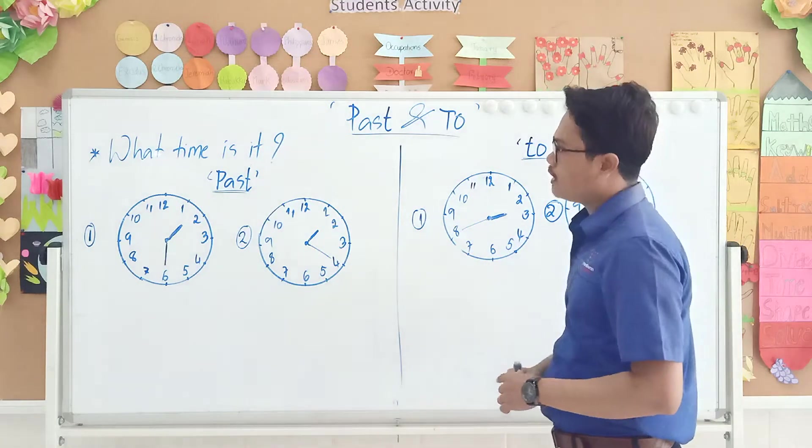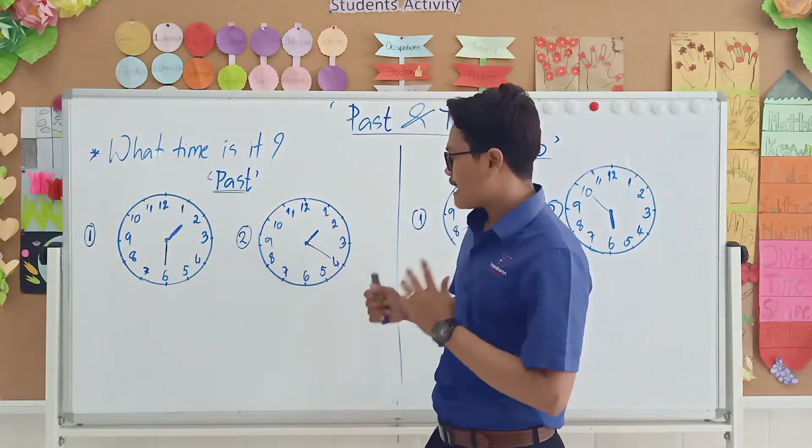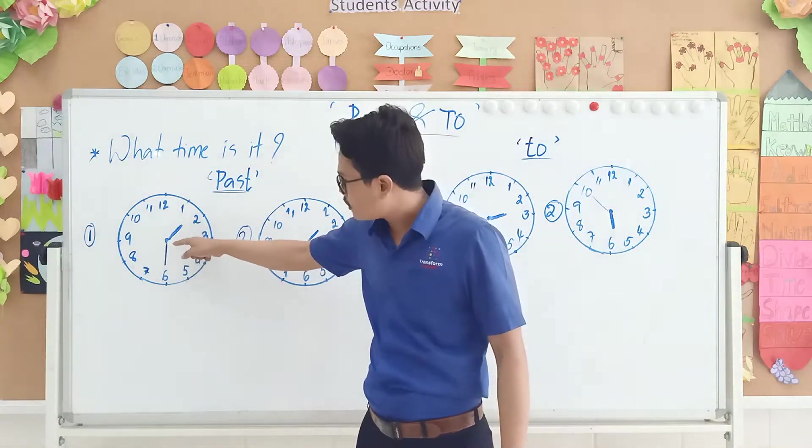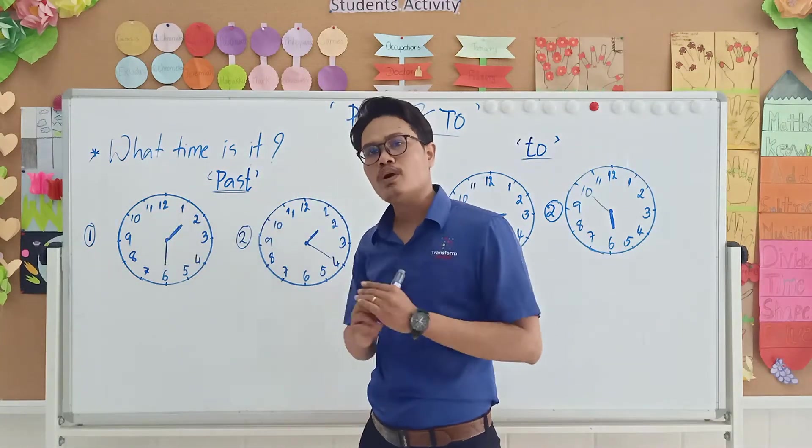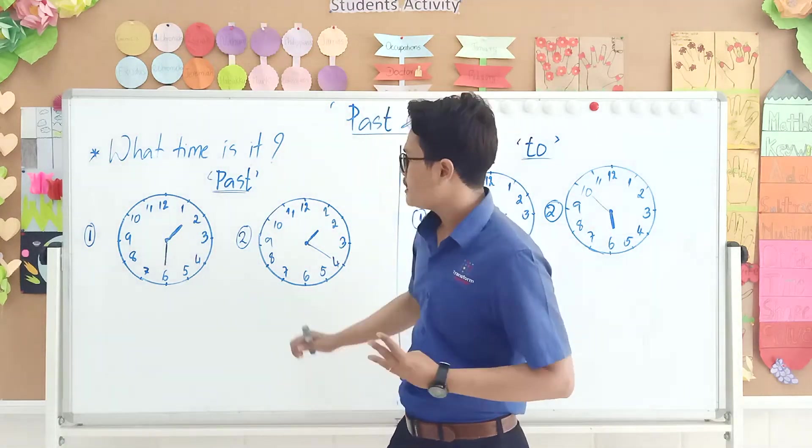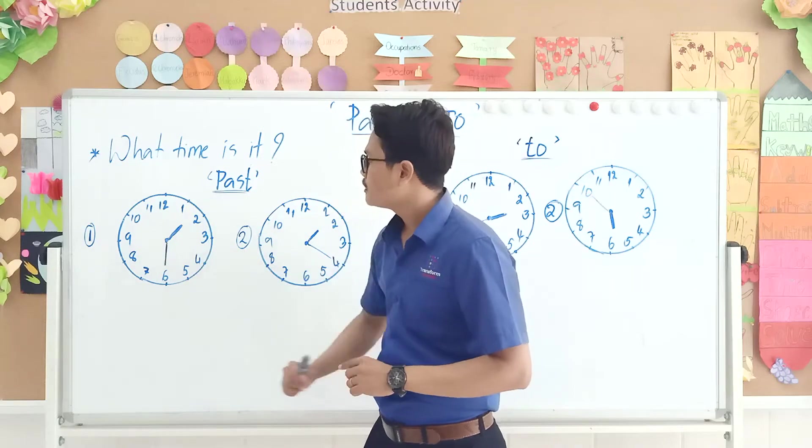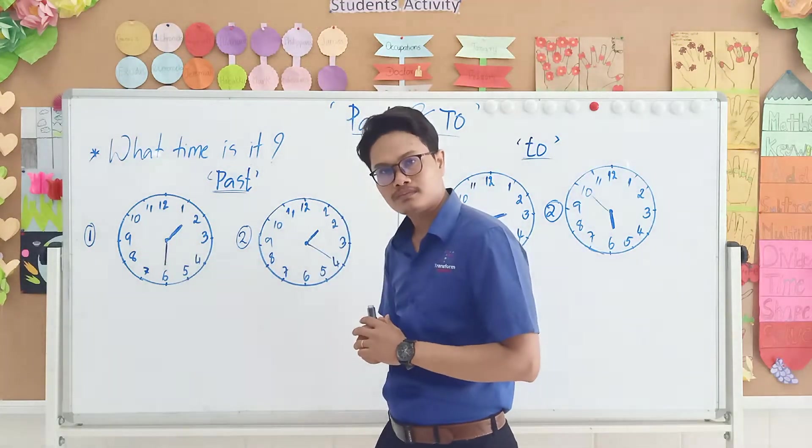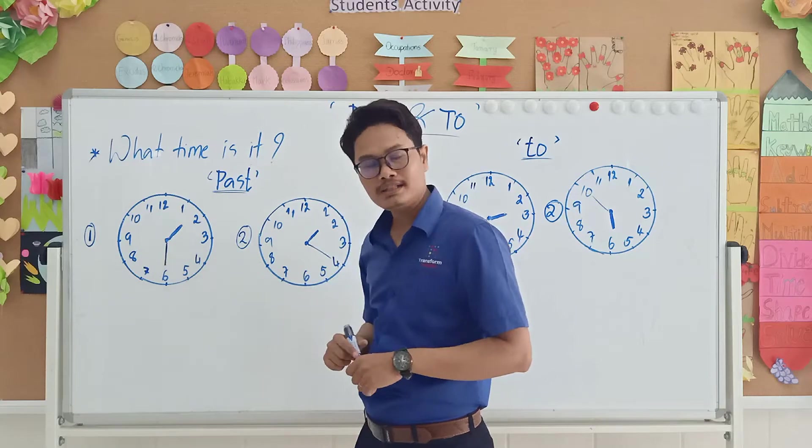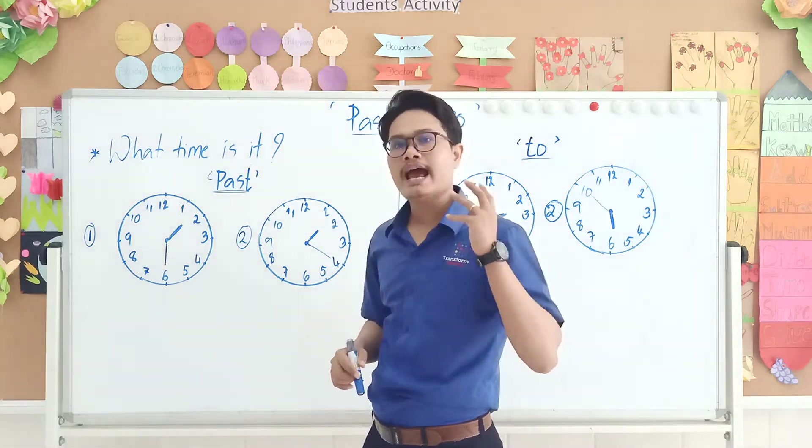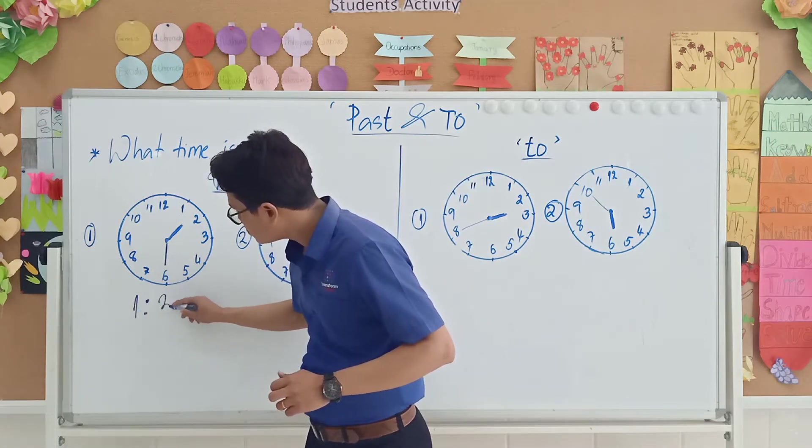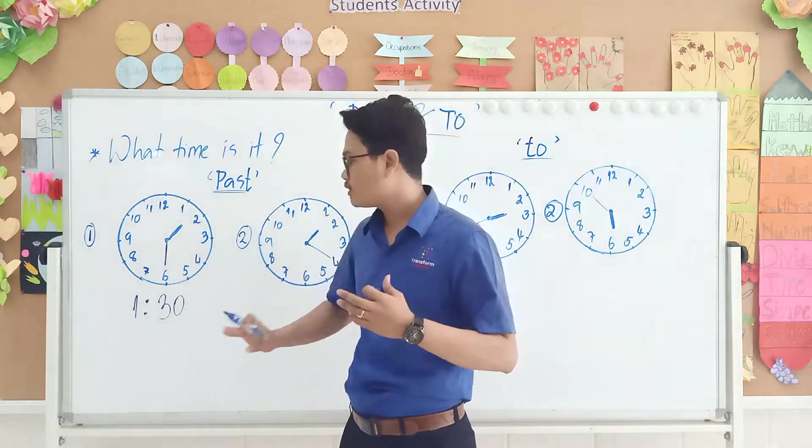As you know from last week, the long hand tells you about the minutes and the short hand tells you about the hours. Can you tell me what time is it? It is 1:30 or one and a half. You can write 1:30 minutes or you can say one and a half as well.